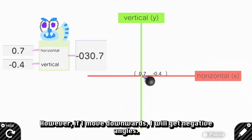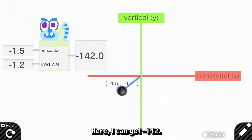However, if I start moving downwards, I will get negative anchors. And here, I can get negative 142.